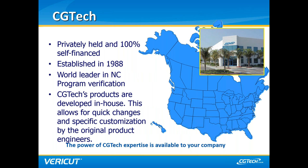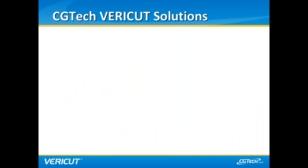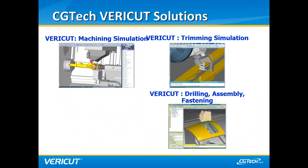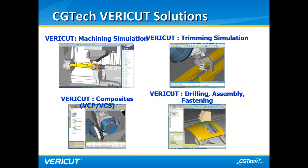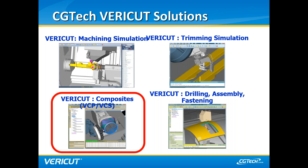CG Tech is headquartered in Irvine, California, with numerous offices worldwide in South America, Europe, and Asia. They have long found success in simulation and verification for metal cutting programs while offering composites programming and simulation tools since 2004. The most relevant offerings are the VeriCut Composites Programming and VeriCut Composites Simulation packages — VCP and VCS.